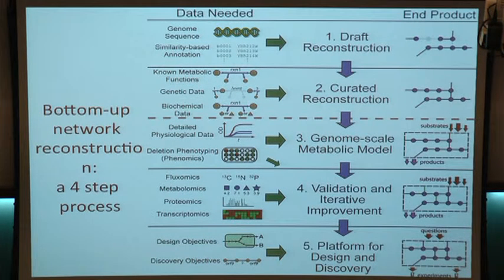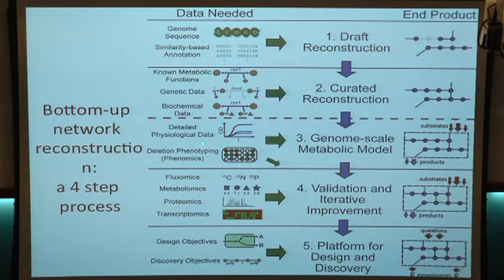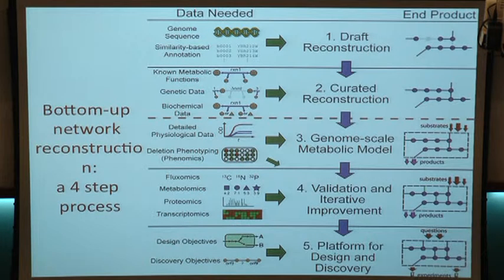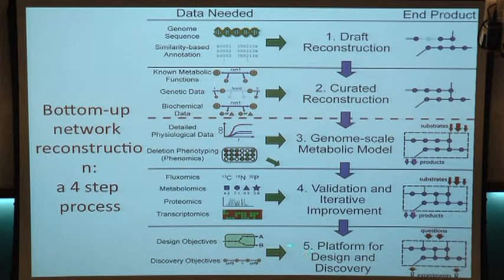Different kinds of data are needed at each stage. The draft reconstruction is mostly your genome sequence, similarity-based annotations, all computation-driven. The curated reconstruction draws on known metabolic functions, genetic data, biochemical data. The genome-scale model uses deletion phenotypes and growth yields on many different substrates. As you do validation, you can get into more information: fluxomics is probably the most valuable, telling you what the actual fluxes through the network are as you change conditions. You can also use metabolomics, proteomics, and transcriptomics. As a platform for design, it comes down to your objective: can you catalyze a desired reaction and make a new product?